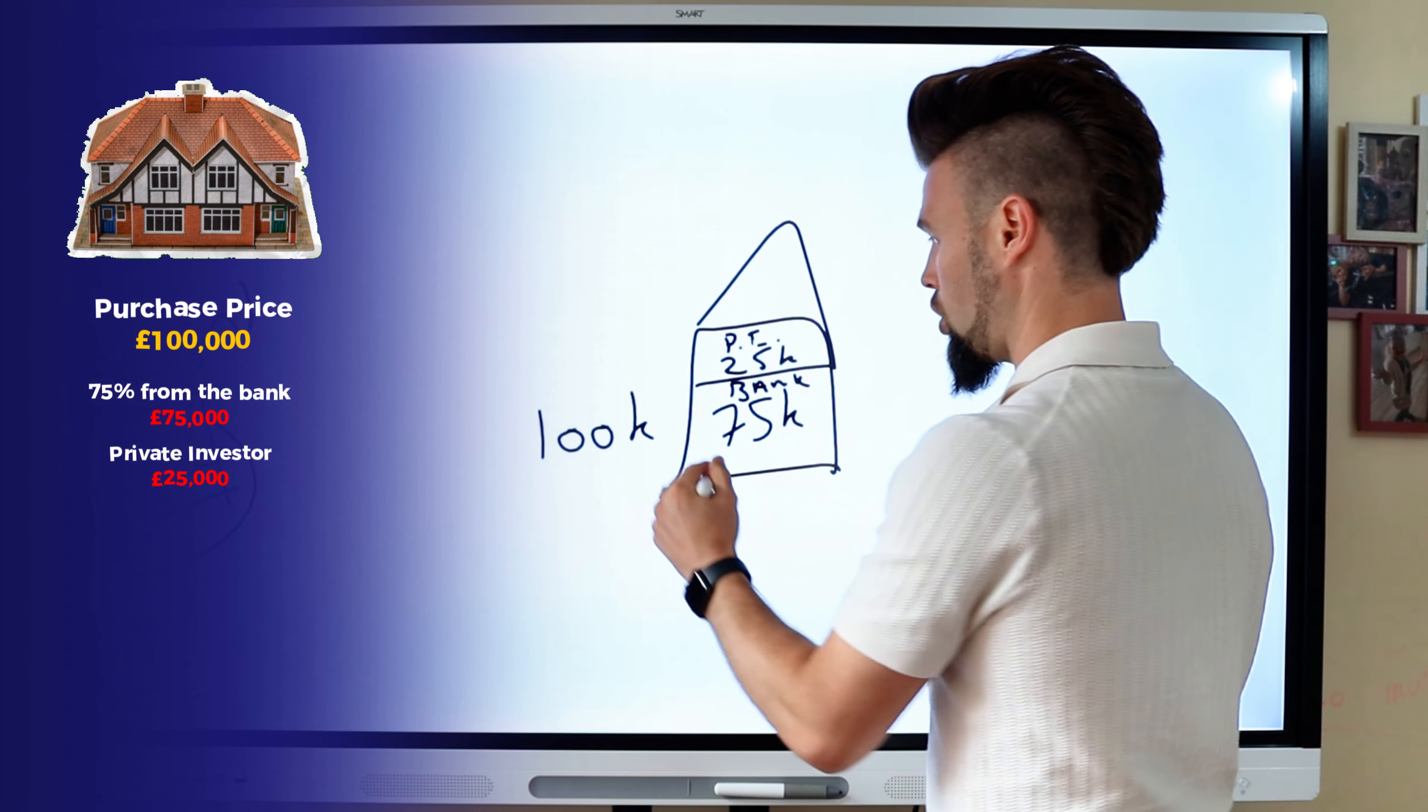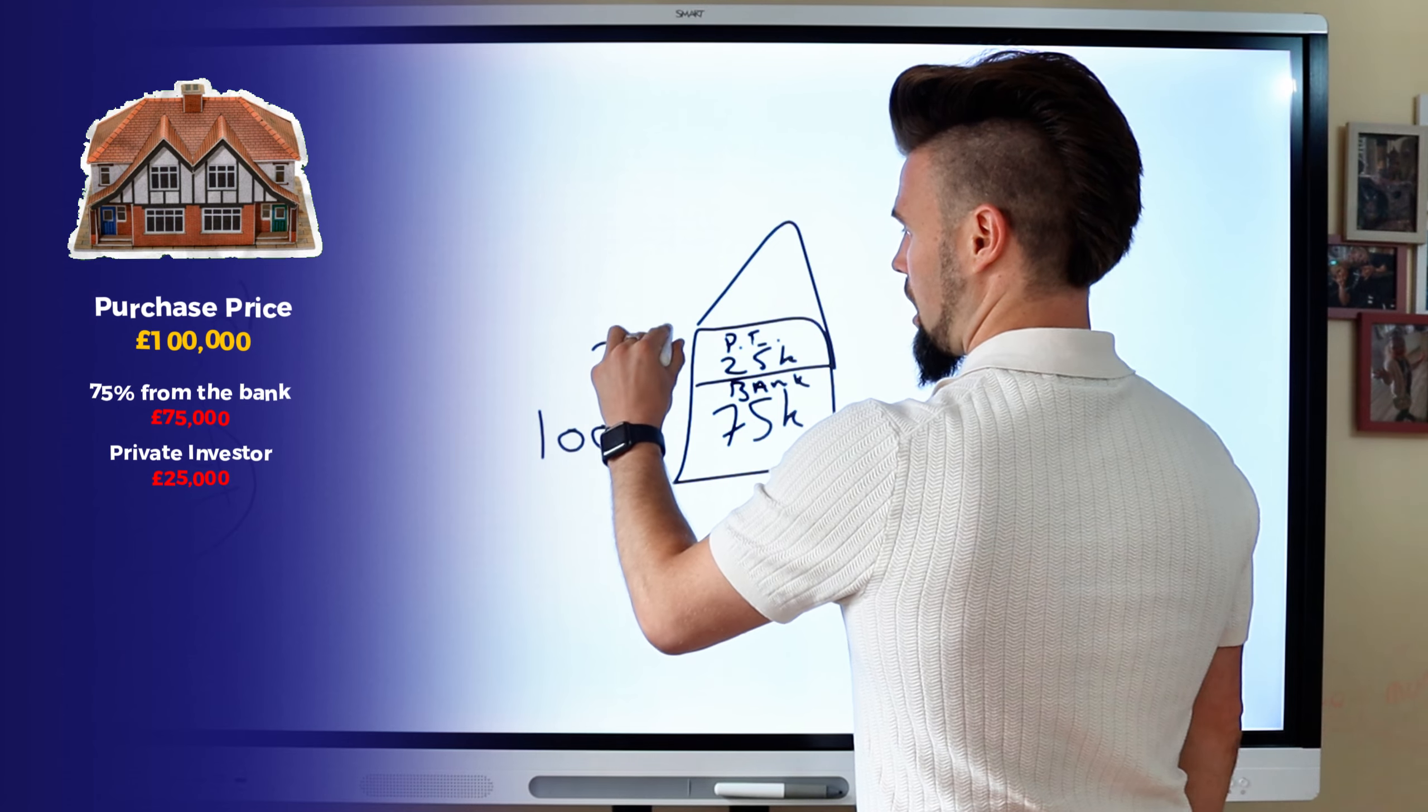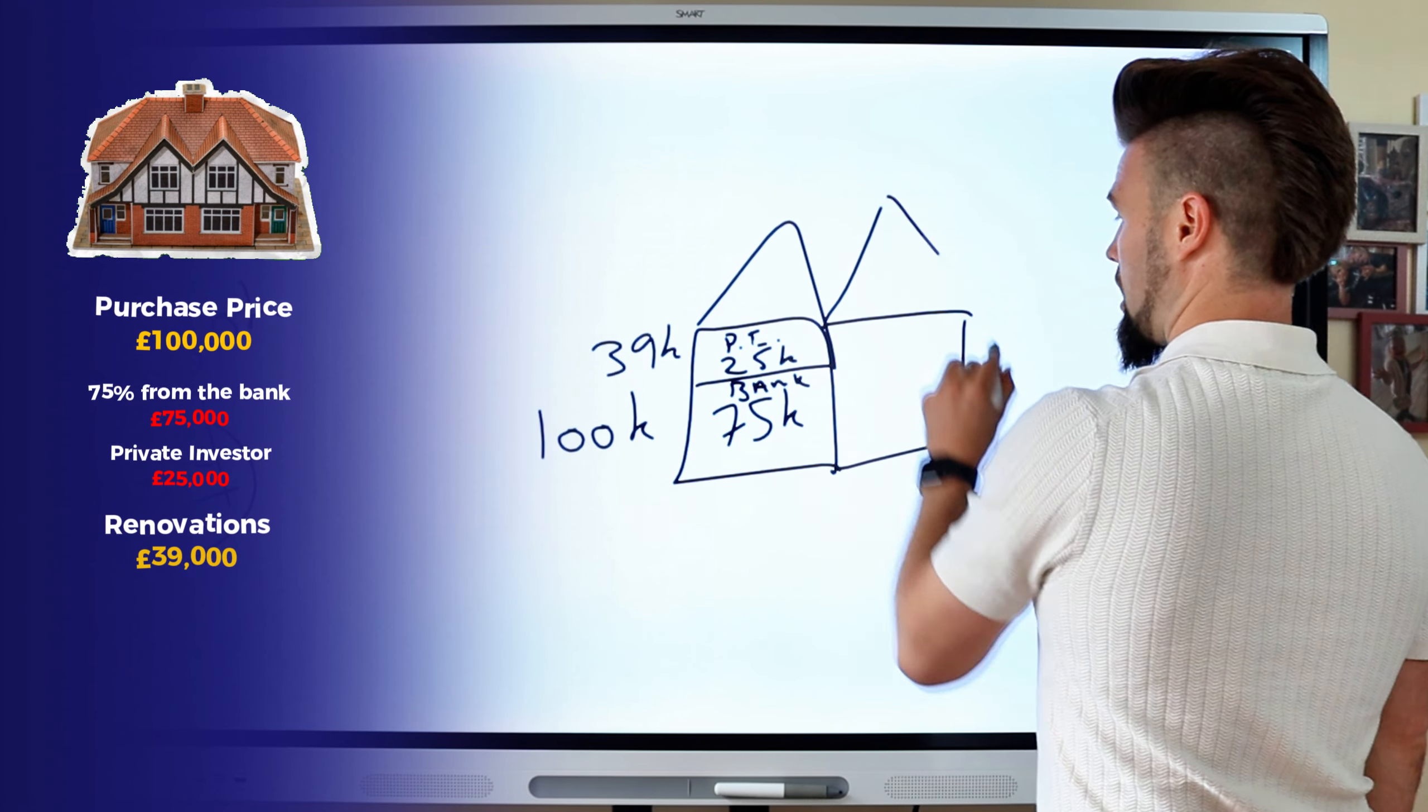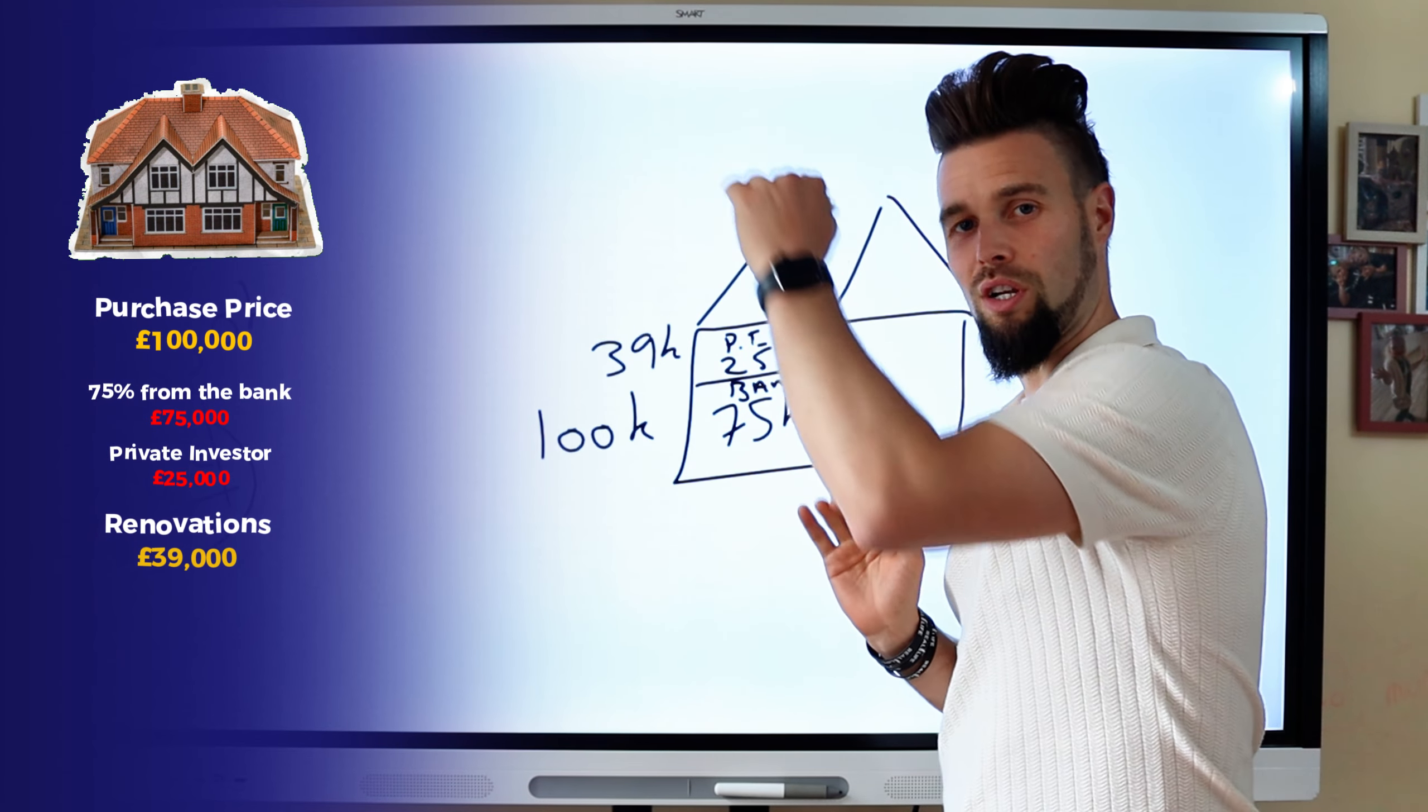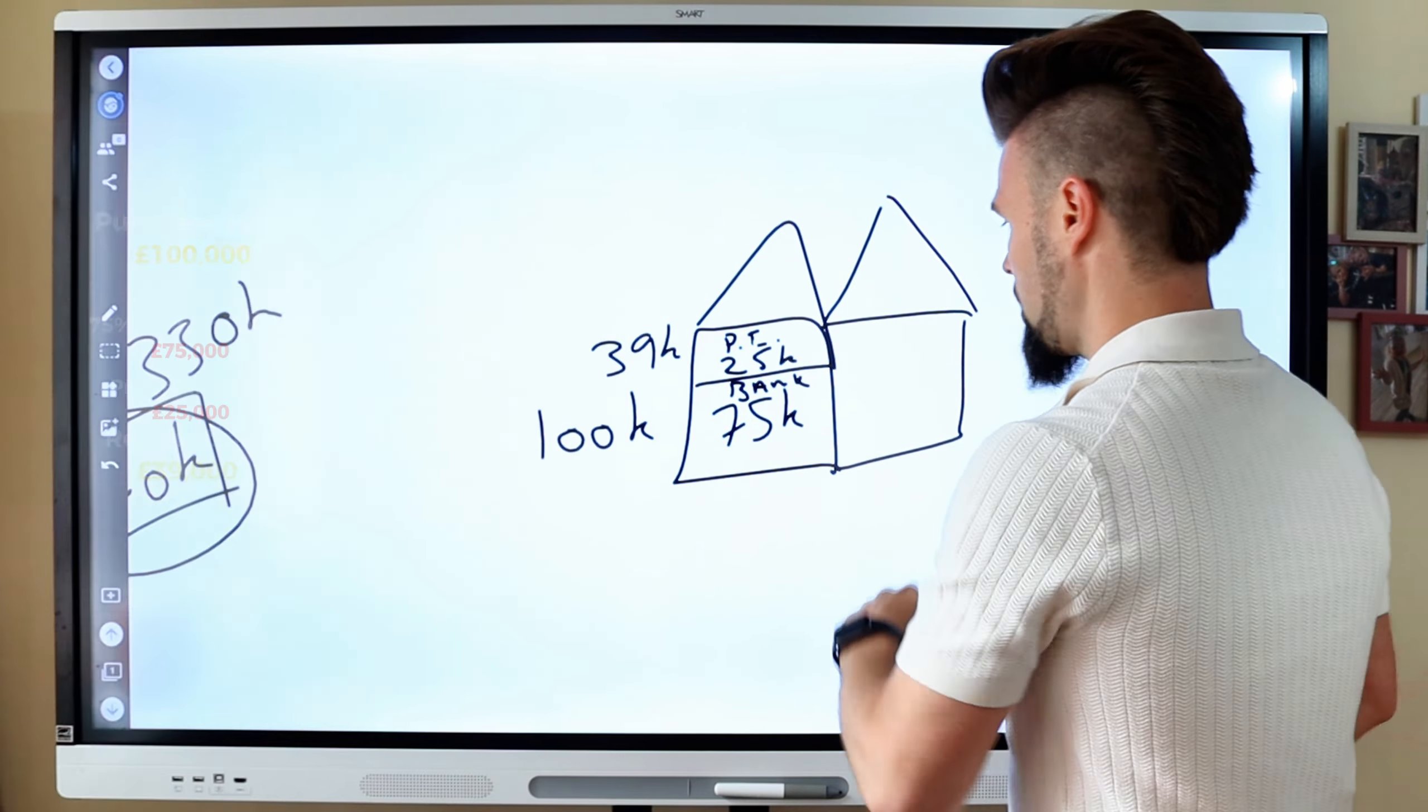But here's another example, because you might not always want to sell, but how do you still do deals? So again, we can go ahead and buy a house for 100,000 pounds. How do I do it with zero of my own money? Well, first of all, I'm going to borrow 75% from the bank, which is 75,000 pounds.